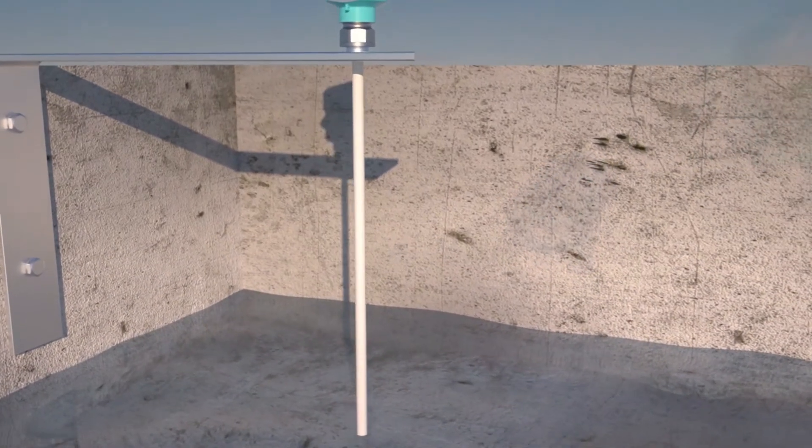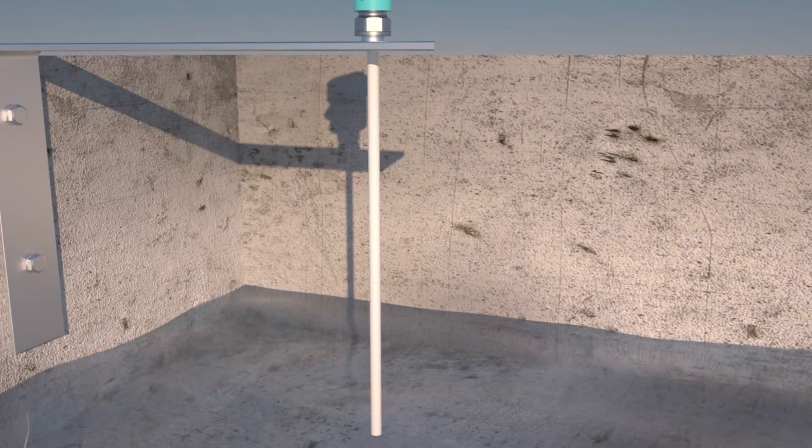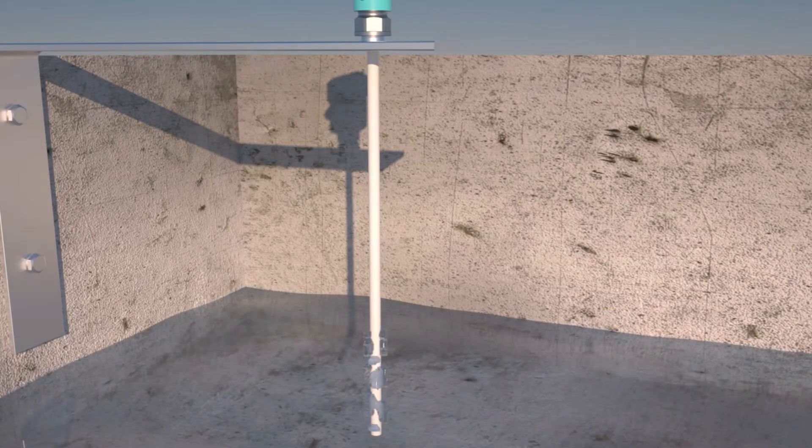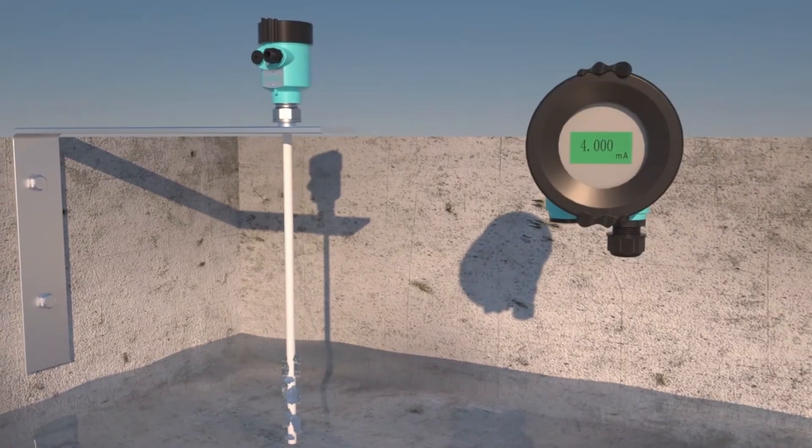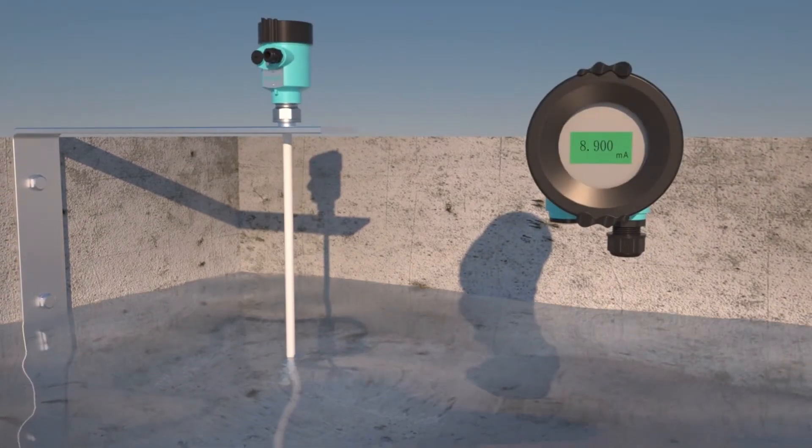Even if the sensor is stained with hanging material during the measurement process, the measurement accuracy will not be affected at all. Strong anti-interference ability can overcome the influence of steam, foam and stirring on the measurement.